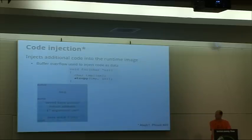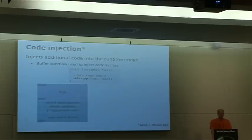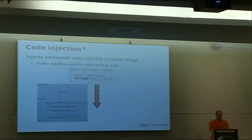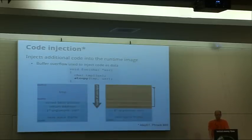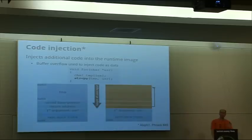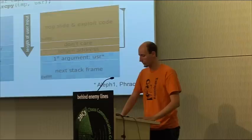The stack looks like this: we have our stack frame from the bottom, then the first argument to our function, a saved return address, a base pointer, and our temporary array on the stack. We start to copy user input and end up with a NOP slide and exploit code injected through the data buffer. We override the return address to point back to the beginning of the buffer and get control over the application — we redirect the control flow, inject new code, and execute arbitrary code controlled by the attacker.